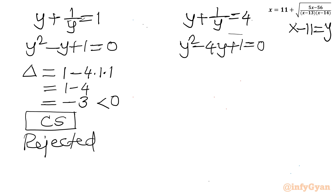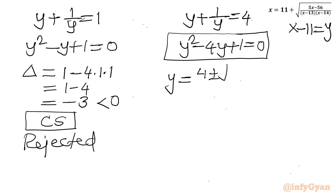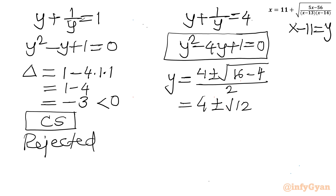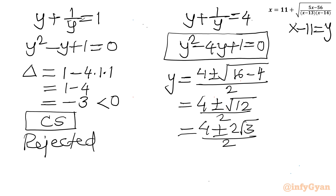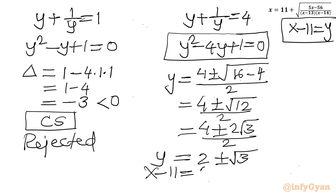Now coming to the second quadratic equation: y equal to minus b, so 4 plus or minus under root of b squared (16) minus 4ac (4), over 2a which is 2. So I can write 4 plus or minus square root of 12 over 2, which is 4 plus or minus 2 root 3 over 2. After dividing by 2: y equals 2 plus or minus root 3. Since y = x minus 11, I can write x minus 11 equal to 2 plus or minus root 3. Adding 11 to both sides gives x equal to 13 plus or minus root 3.